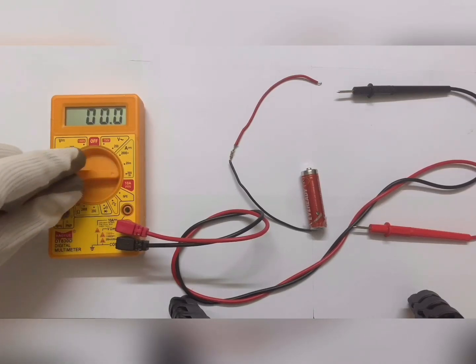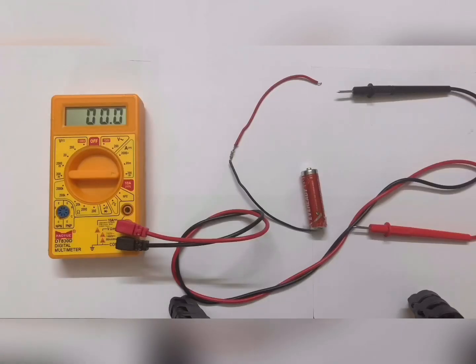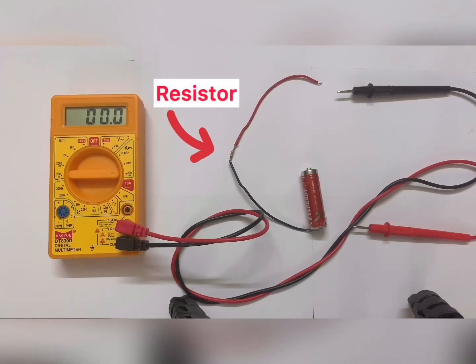For this module I have prepared a simple circuit consisting of a resistor, a multimeter, and a battery. The multimeter is connected in series with the resistor and the battery — this is a very basic electrical circuit.